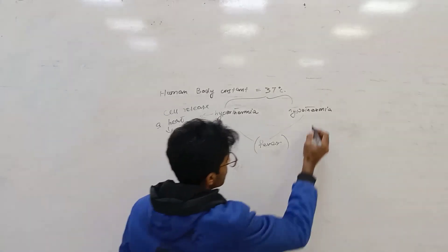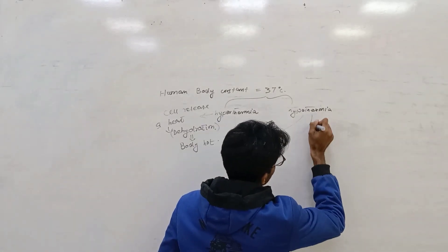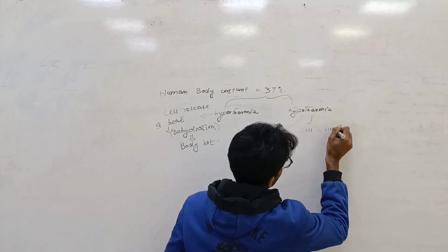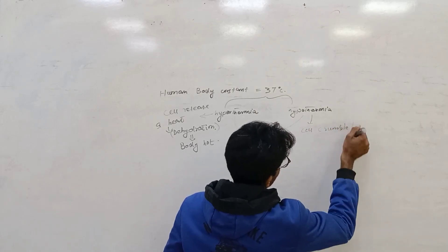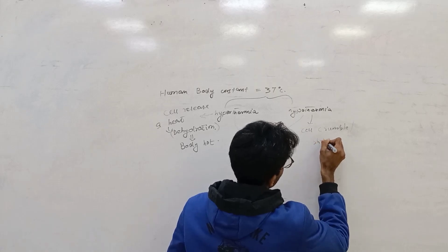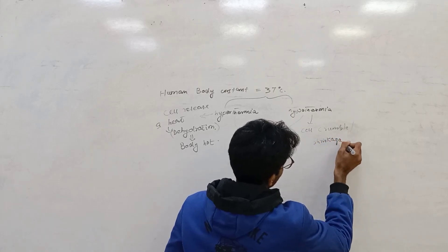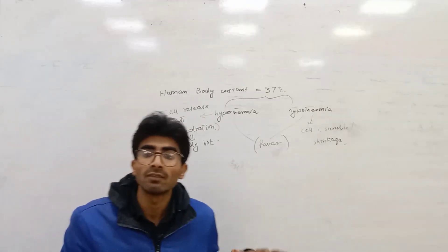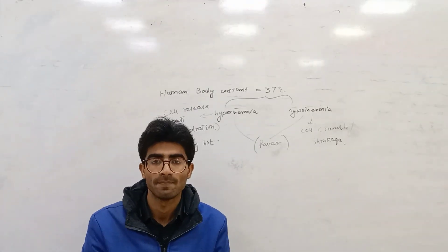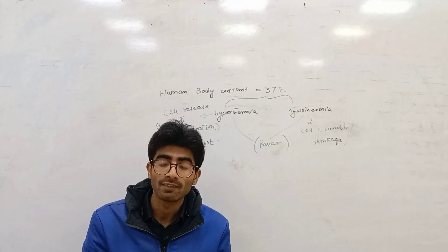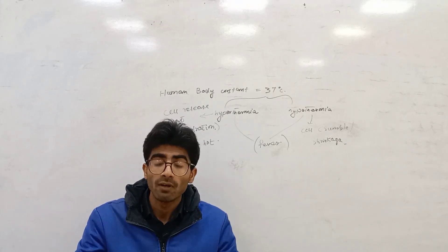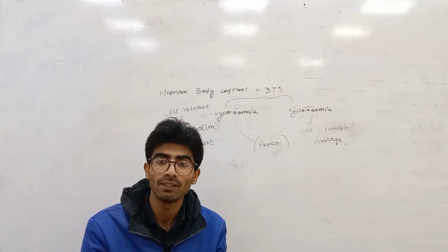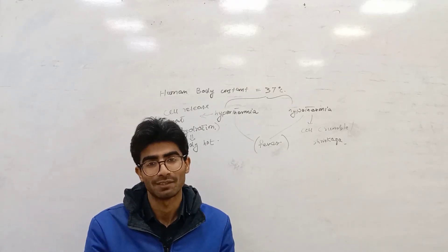In hypothermia, cell crumble, shrinkage due to the low body temperature. This totally depends on homeostasis. Homeostasis means our body temperature normal. How it be normal is totally depend on cell structure.